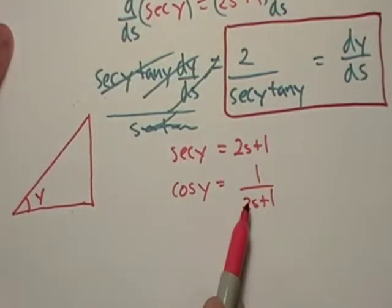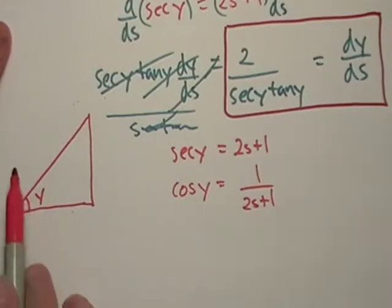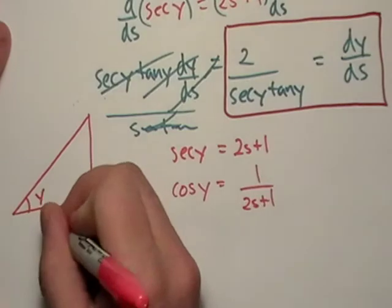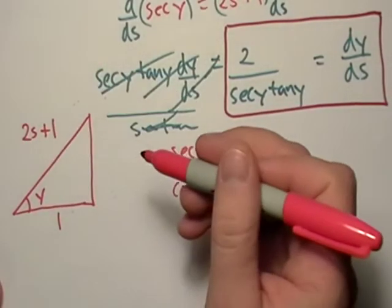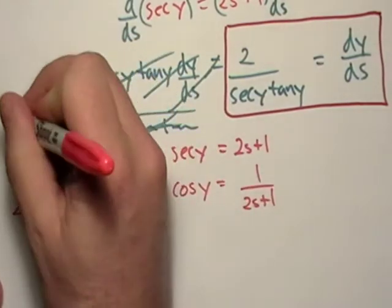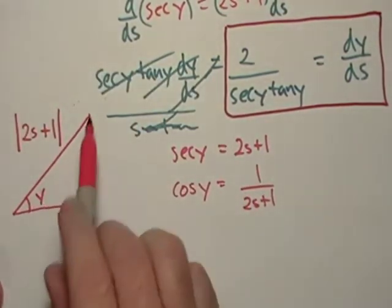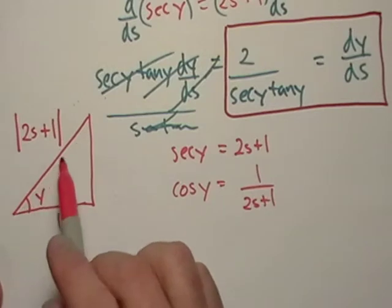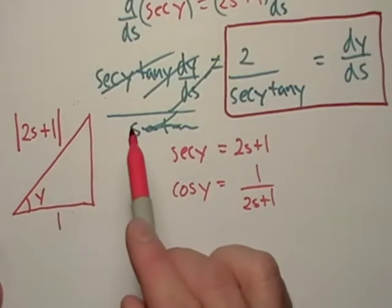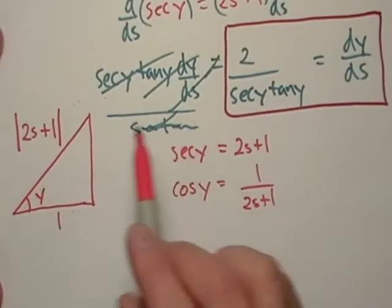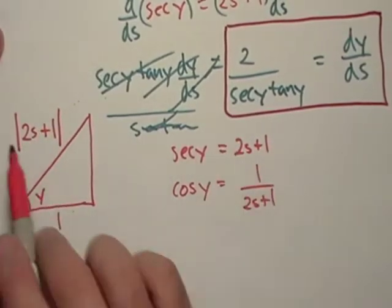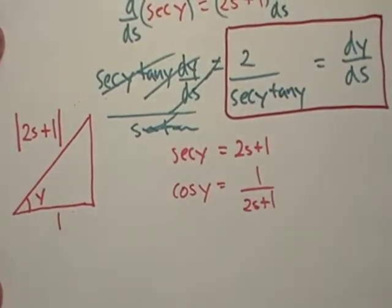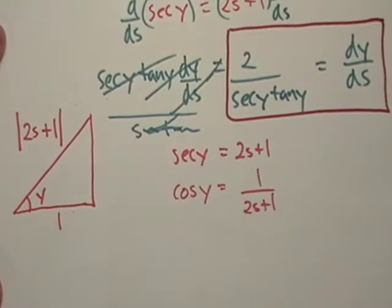Okay, so cosine of y, that's going to be adjacent over hypotenuse. So, if we go over here, that'll be 1 over 2s plus 1. And it's not just 2s plus 1. It's absolute value. Okay, remember, this is a length right here. Okay, so the length has to be positive. So, if we have a variable tied up in there, we need to make sure we let everybody know that, you know, this is going to be a positive number.